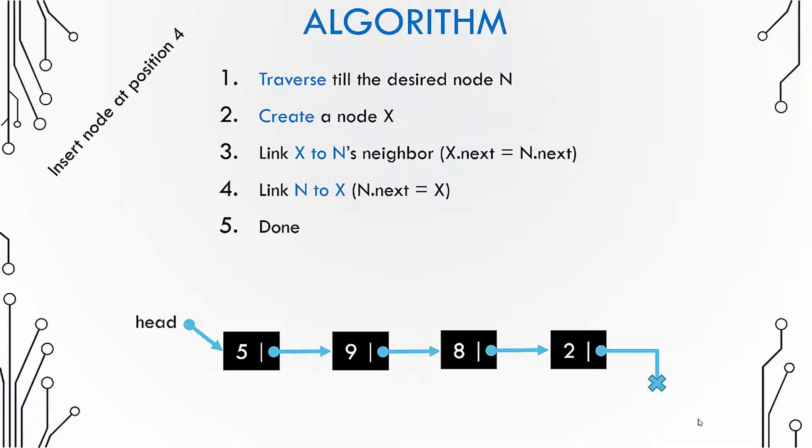So we want to insert a node at position number 4. So the position number 4 would be 1, 2, 3 and 4. So in place of 2 we need to have a new node and 2 should be shifted to the right hand side.